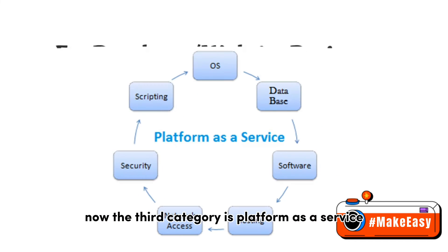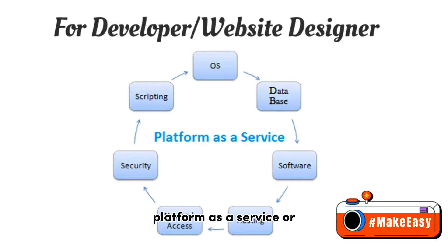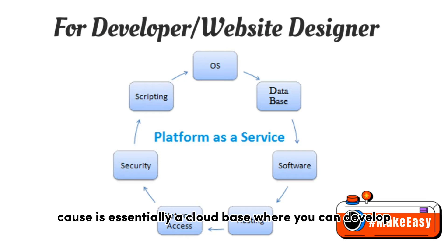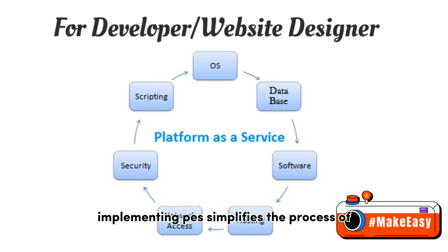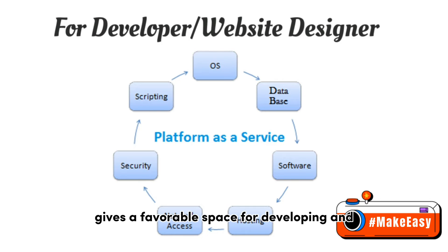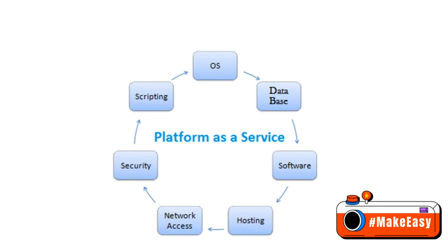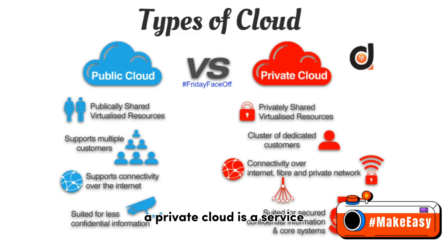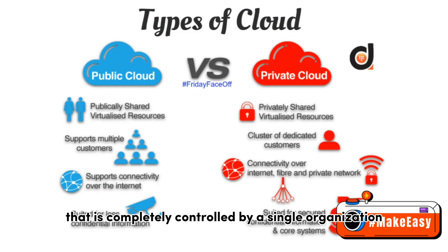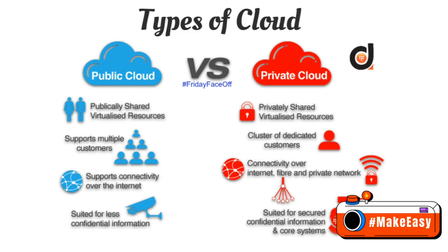Number 3: PaaS — Platform as a Service. PaaS is essentially a cloud base where you can develop, test, and organize different applications for your business. Implementing PaaS simplifies the process of enterprise software development. The virtual runtime environment provided by PaaS gives a favorable space for developing and testing applications. Finally, regarding cloud types: a private cloud is a service completely controlled by a single organization and not shared with others, while a public cloud is a subscription service offered to any customers who want similar services.